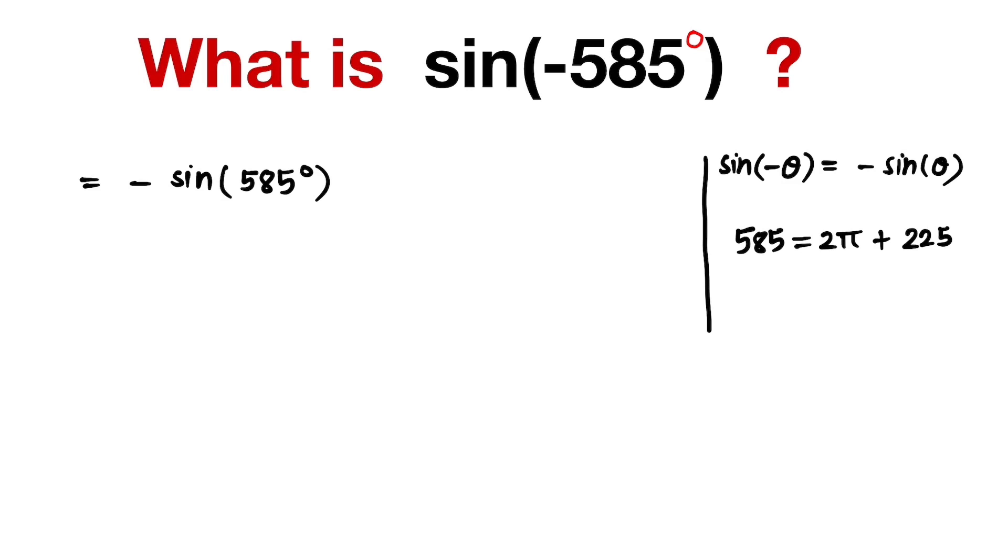So this gives us sine of 2π plus 225 degrees. We know that sine of 2π plus theta is the same as sine theta, because sine is a periodic function with period 2π.